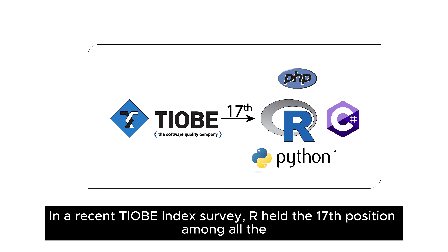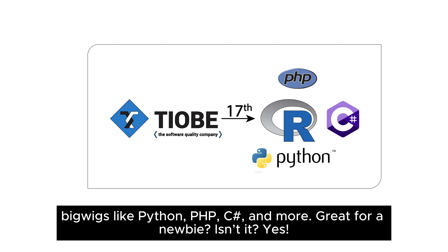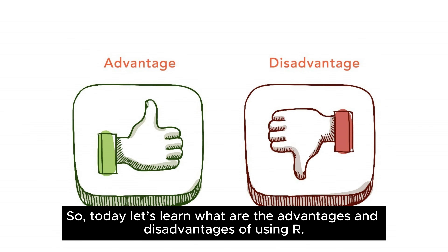In a recent TIOBE index survey, R held the 17th position among all the big players like Python, PHP, C Sharp, and more. Great for a newbie, isn't it? So today, let's learn what are the advantages and disadvantages of using R.